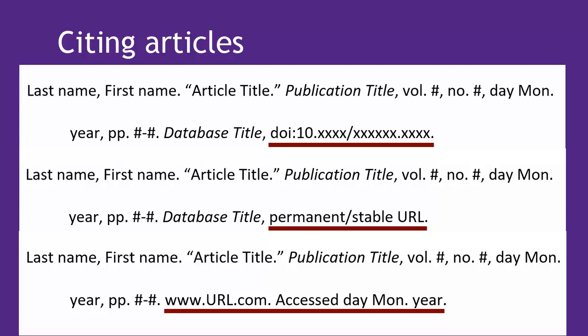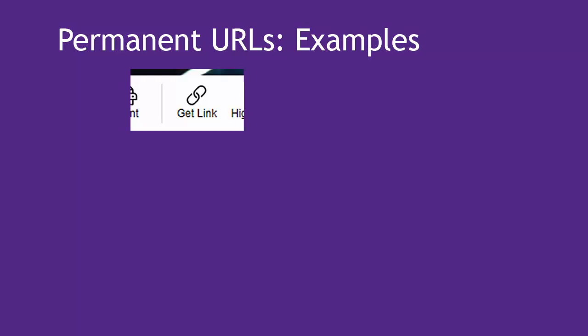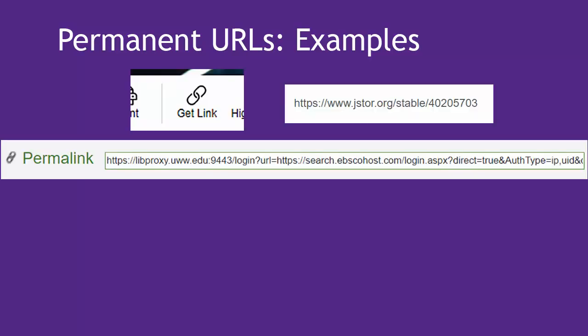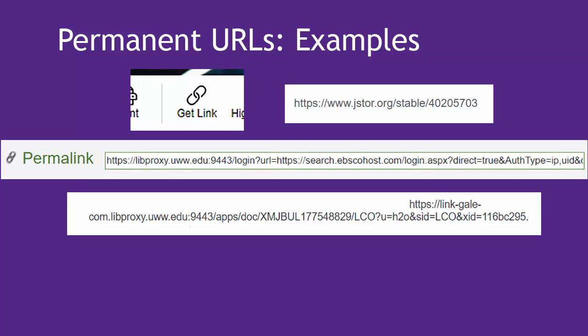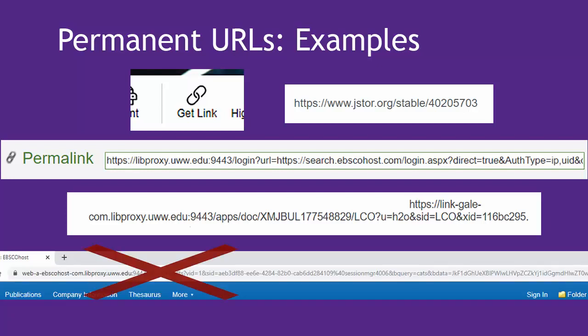Let's look at some examples of a stable URL or DOI. Different databases put the permanent or stable URL in lots of different places, as seen here. Look for something that says permanent URL, permalink, or maybe stable URL to tell you that it's a stable link. However, notice that a long link from the top URL box of your web browser is usually not a stable URL.